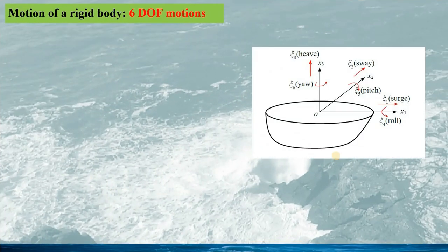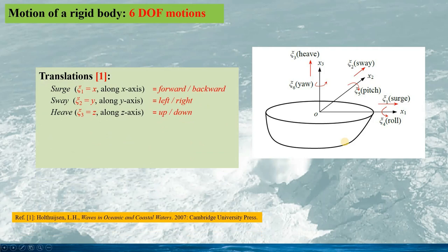For marine structures, their motion can be described using 6 degrees of freedom motion, as shown in this picture, where the arrows show the positive motions for each motion mode. The 6 degrees of freedom motion includes 3 translational motions: surge, which is the motion along the x-axis moving forward and backward; sway, the motion along the y-axis moving to left and right; and heave, the motion along the z-axis, moving up and down of the structure in waves.